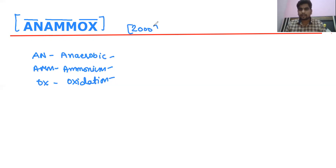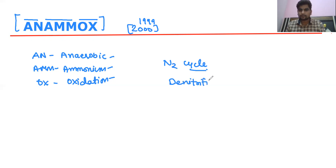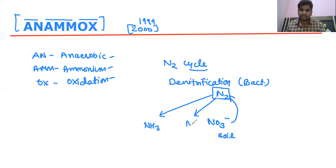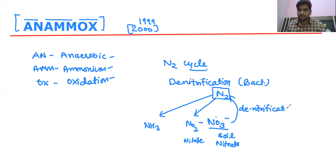Anammox is a recently discovered term — discovered around 1999 or 2000 — in the nitrogen cycle. Earlier in the nitrogen cycle, there was a process called denitrification, which is a bacterial process where nitrates produced in the soil are converted back to dinitrogen (N2). Nitrogen in the environment exists in dinitrogen form, and after biological nitrogen fixation it changes into ammonia, nitrite, or nitrate.